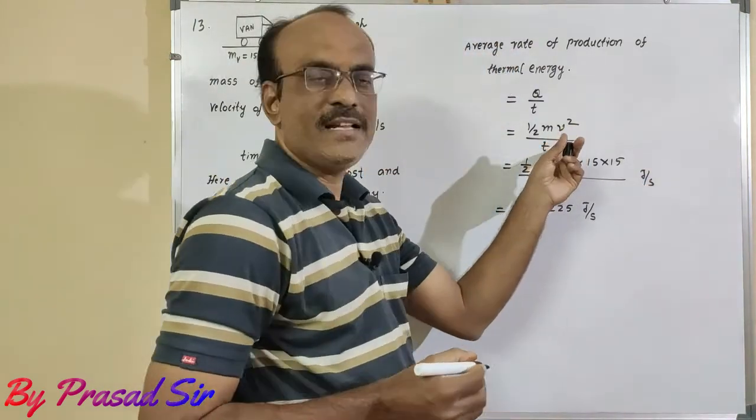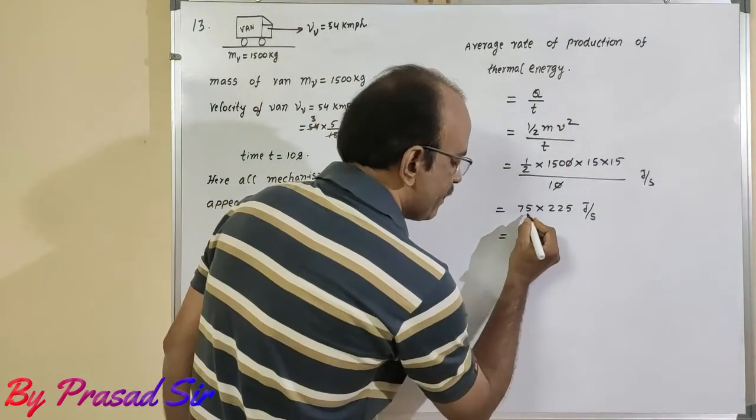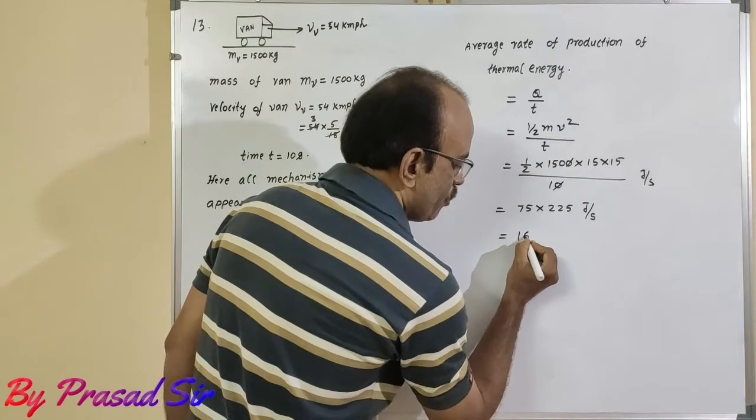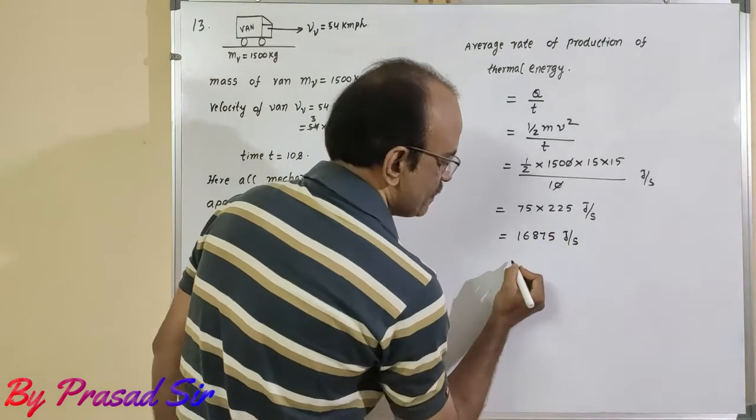Because this is energy and this is time. Multiplication of these two, 75 into 225, 16875 joule per second.